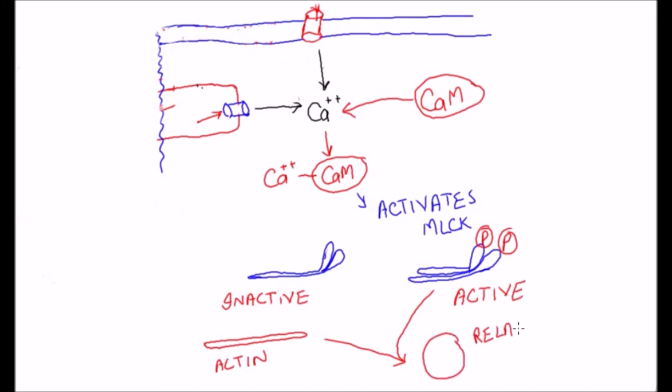To relax a section of smooth muscle after it has been contracted, the calcium ions must be removed from the intracellular fluid. This removal is achieved by calcium pumps that pump calcium ions out of the smooth muscle fiber back into the extracellular fluid or into the sarcoplasmic reticulum.